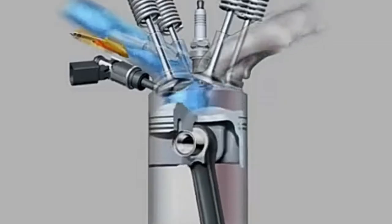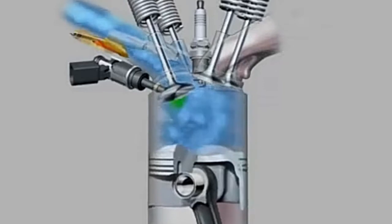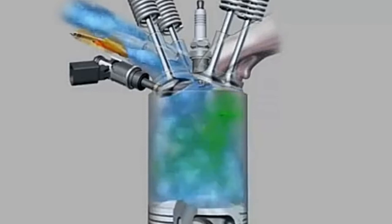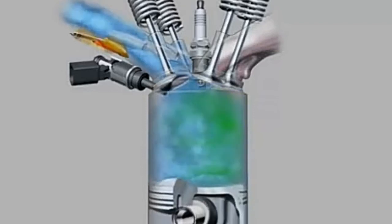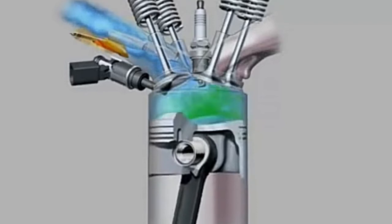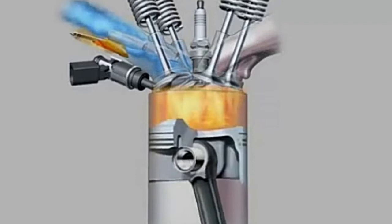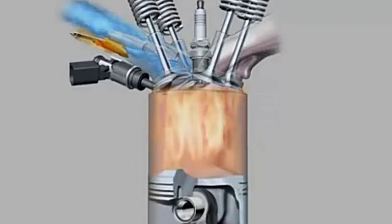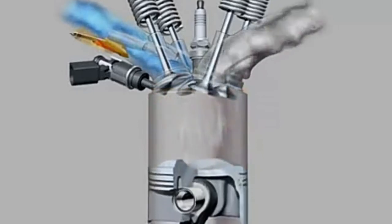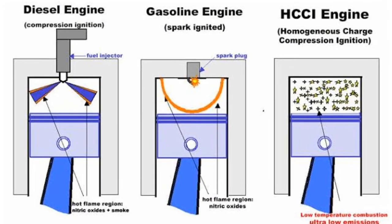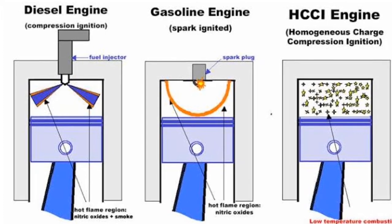In an SI engine, the single flame front created by spark ignition propagates all over the combustion chamber, compressing the surrounding air-fuel mixture to a high pressure and temperature. If the temperature exceeds the auto-ignition temperature of the fuel, another flame front is created in the pockets of the combustion chamber. This propagates in the opposite direction to the initial flame front, and they collide, creating a high pressure that damages the engine — this is knocking.